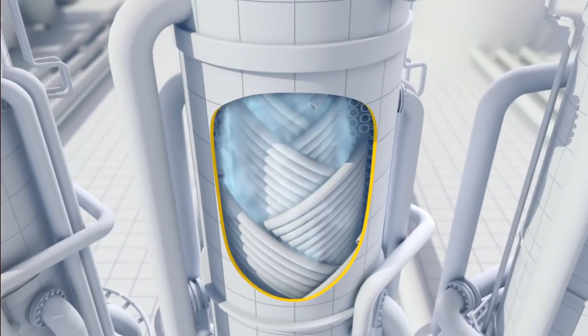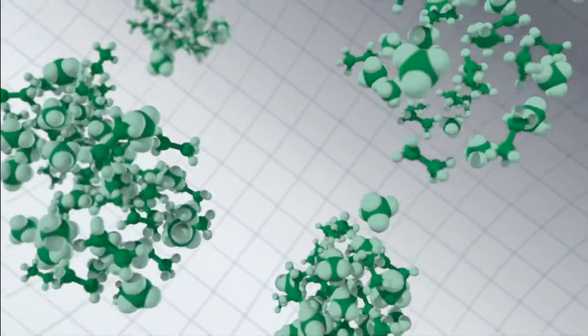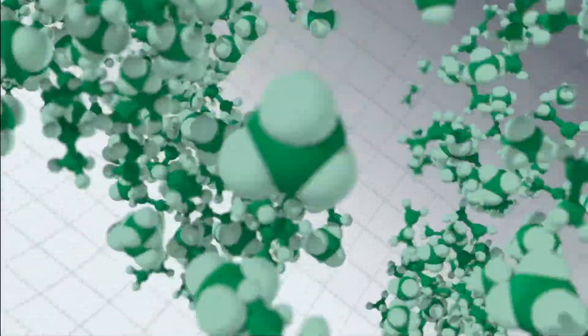A coolant, chilled by giant refrigerators, absorbs the heat from the natural gas. It cools the gas to minus 162 degrees centigrade, shrinking its volume by 600 times.